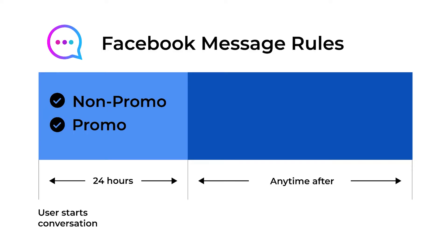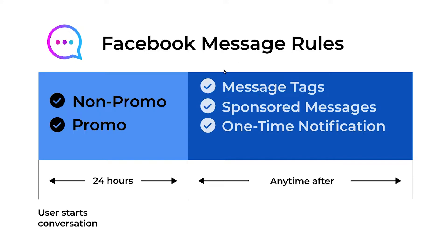Every time a user interacts with your chatbot in Facebook Messenger, a 24-hour window will open. Within this 24-hour window we can send non-promotional content and promotional content to the user. But outside the 24-hour window we can only send message tags, sponsored messages, and the one-time notification.